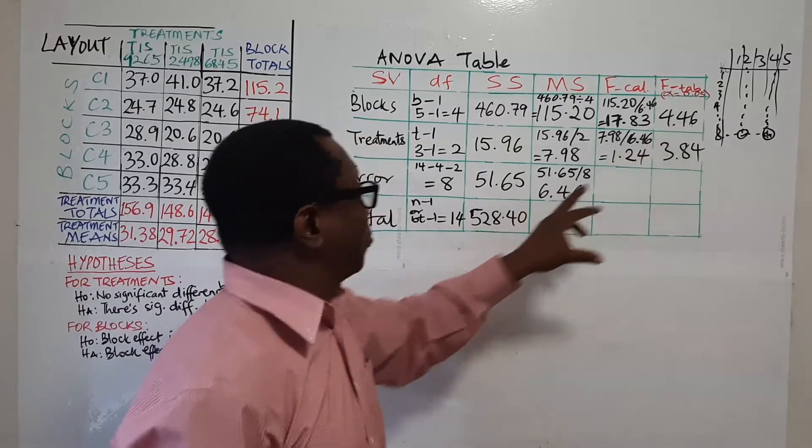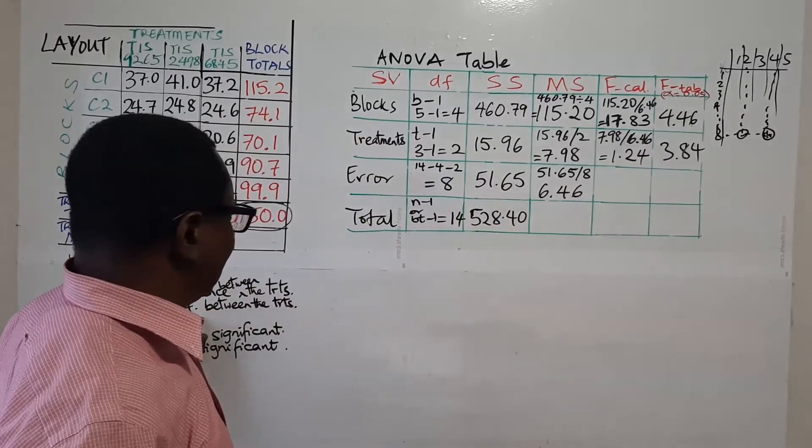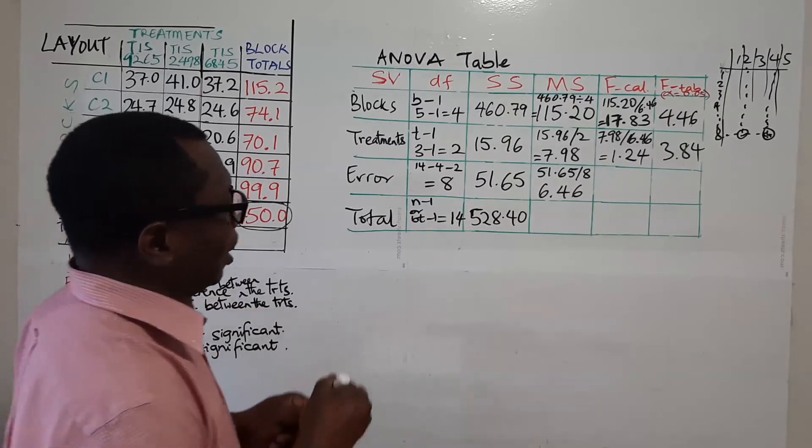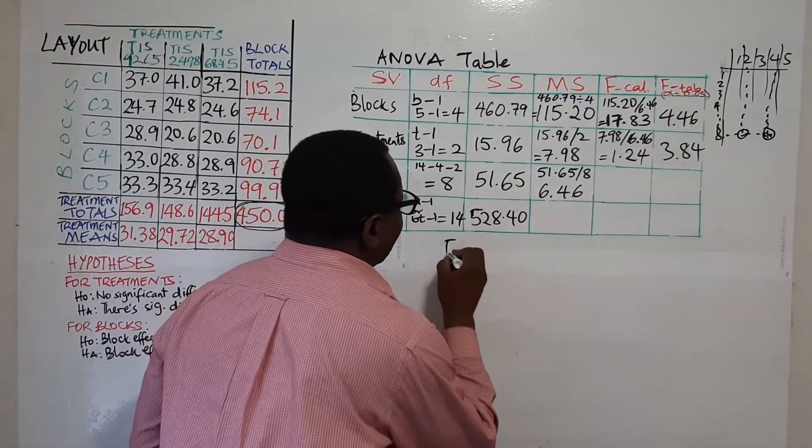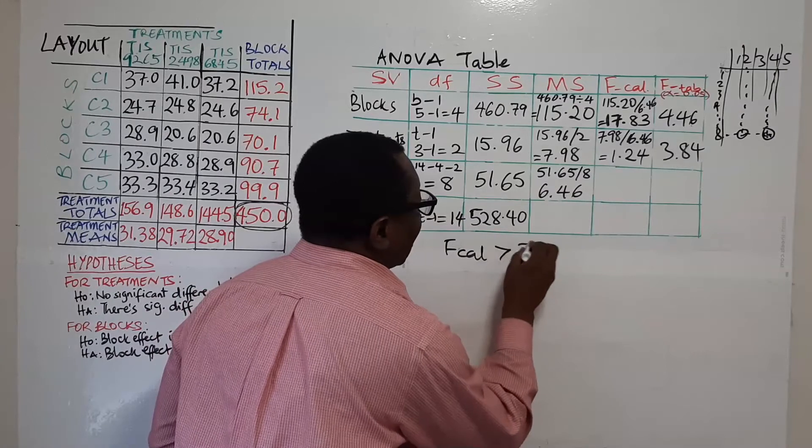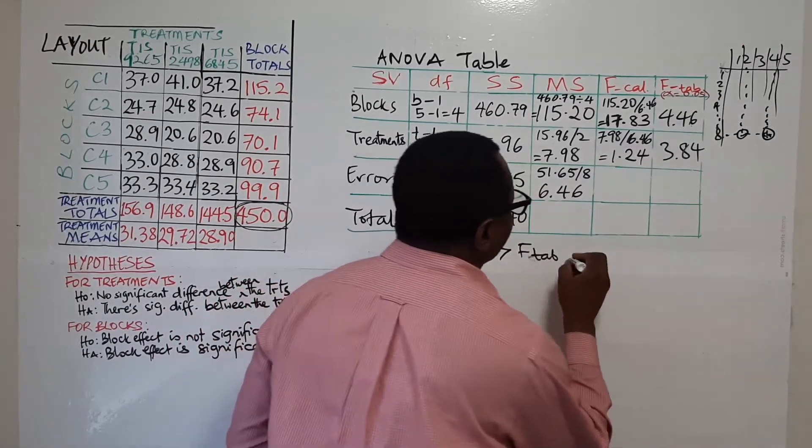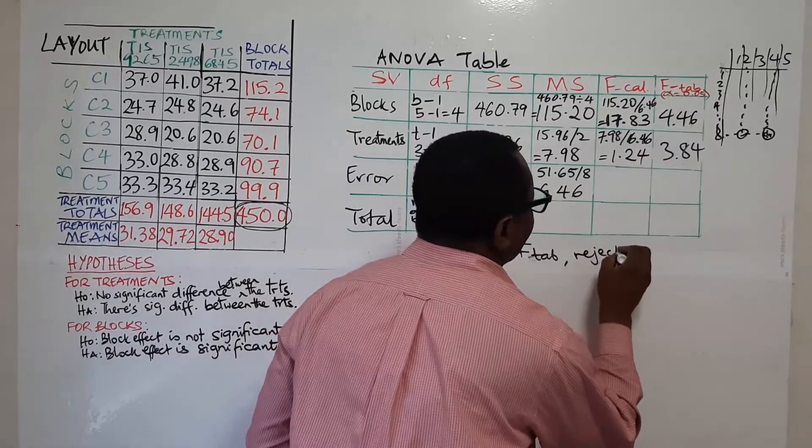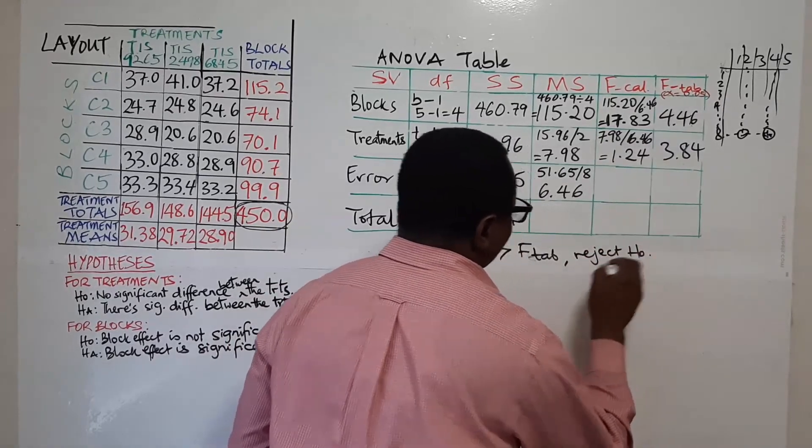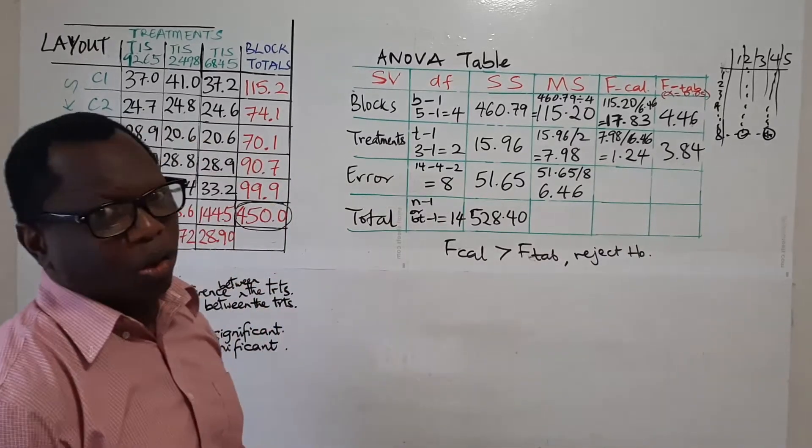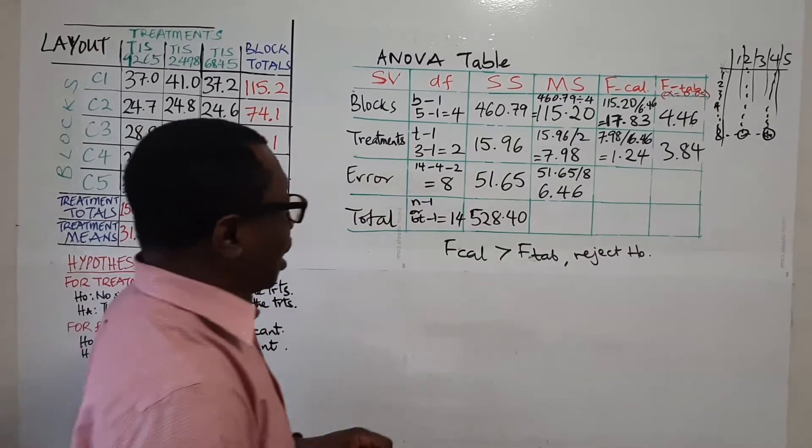So with this now, you can make decision regarding your null hypothesis in each case. Don't forget, when F-car is greater than F-tab, what do you do? You reject H-O. And if it's the opposite, then you accept H-O. So let's now look at that.